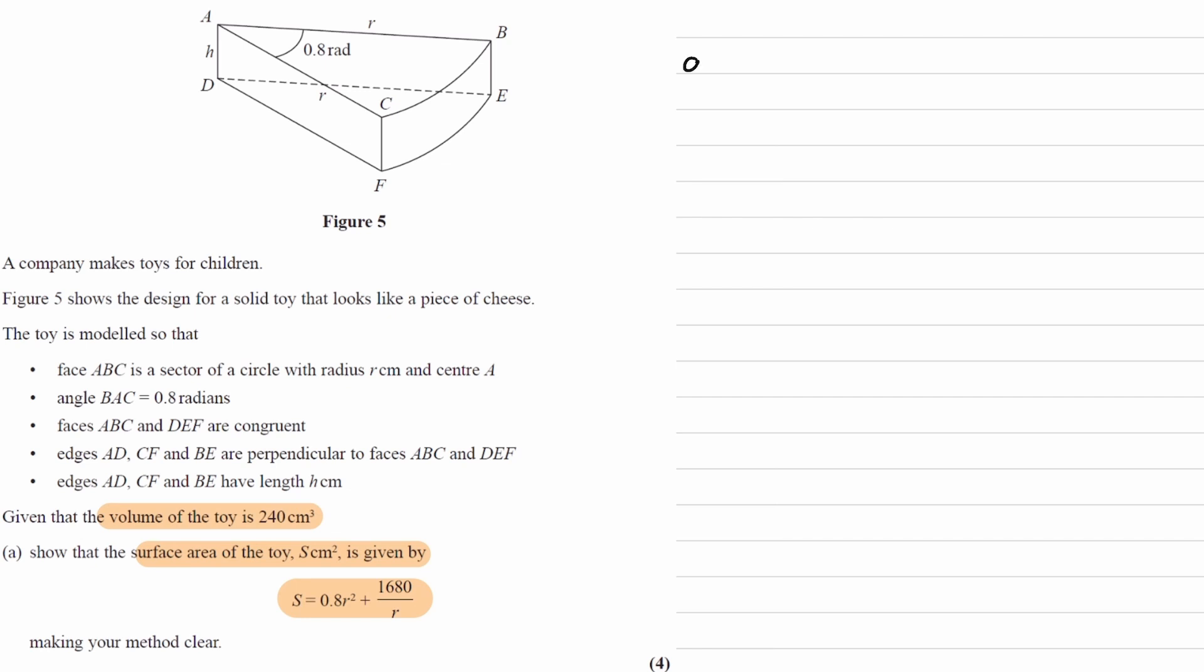Okay, so to work out the surface area, we have to work out the area of this face here, which is the sector, times it by 2 because we have one of those at the bottom as well, work out the area of this side and then times that by 2 as well, and then finally work out this front face here.